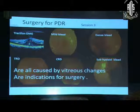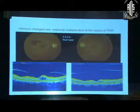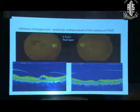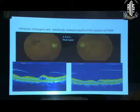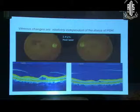We come to part 3: surgery for proliferative diabetic retinopathy. All these changes are caused by vitreous and are indications for surgery. Right and left eye of proliferative diabetic retinopathy — in the right eye, recurrent bleeding takes place and the patient maintains a vision of 6/9. I will be inclined to do a vitrectomy in this case because I would find this vitrectomy as simple as for a macular hole surgery.